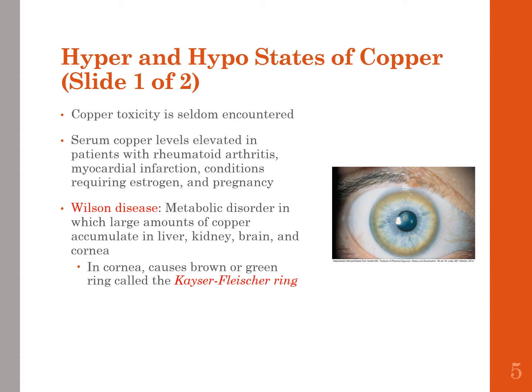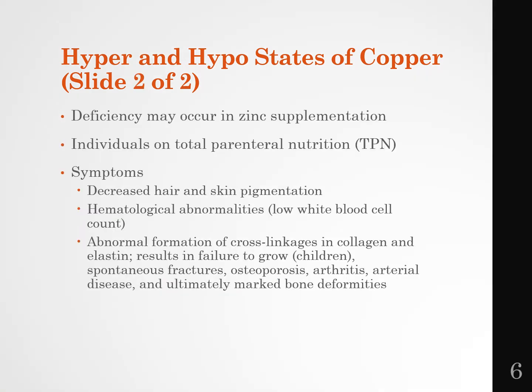Wilson's disease and the Kayser-Fleischer ring are likely to appear on your national board exam. Write down that Wilson's disease is associated with copper — it is a genetic abnormality that prevents proper elimination of copper, causing it to build up in the liver, kidney, brain, and cornea, with that characteristic ring in the cornea as the visible symptom.